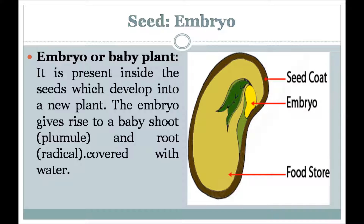The third and last part of a seed is the embryo. The embryo is the most important part of a seed — it has everything a seed needs to grow into a new plant. It has two main parts: plumule and radicle. As the seed grows, the radicle produces the first root, and the plumule produces the shoot of the baby plant. The young plant continues making its own food through photosynthesis.